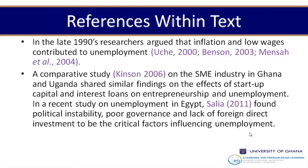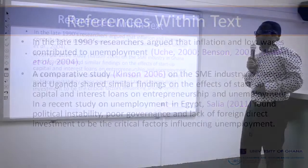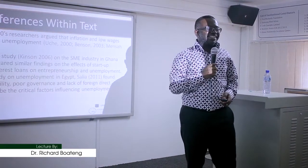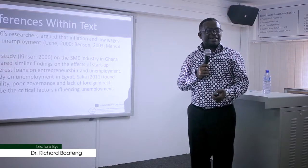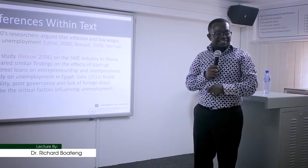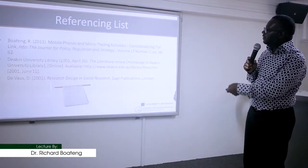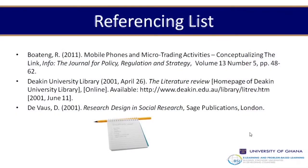Et al. means that there are more than two authors. Some people pronounce it 'et al,' others say 'al' — whichever way, just know it shows there are more than two authors. The reference list can be arranged in alphabetical order, though that depends on the referencing style — it's not always going to be alphabetical order.